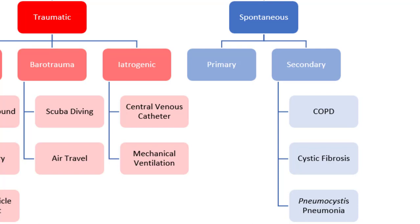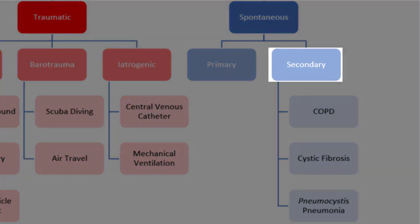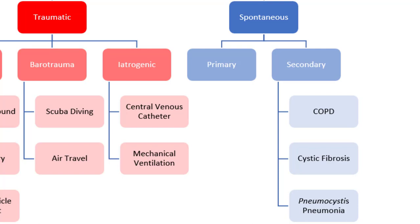Primary spontaneous pneumothorax most commonly occurs in tall, young, male patients. Alternatively, secondary spontaneous pneumothorax refers to pneumothorax in the setting of underlying lung disease. This underlying lung disease may include COPD, cystic fibrosis, or pneumocystis pneumonia.